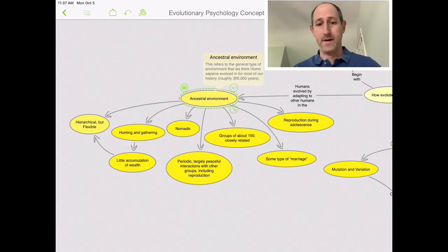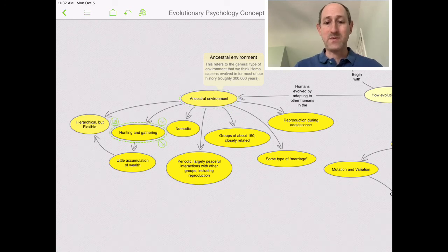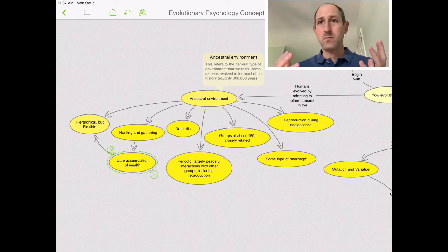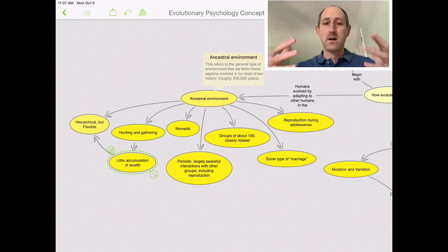What do we think we know about it? Well, it was generally a hunter-gatherer. It was generally, which meant there's little accumulation of wealth, not huge wealthy people, relatively flat hierarchy, but a hierarchy, and flexible hierarchy.